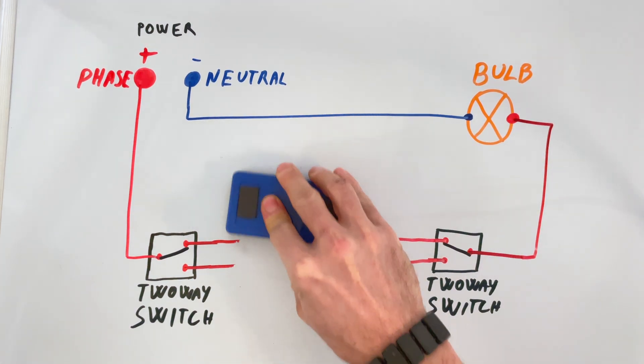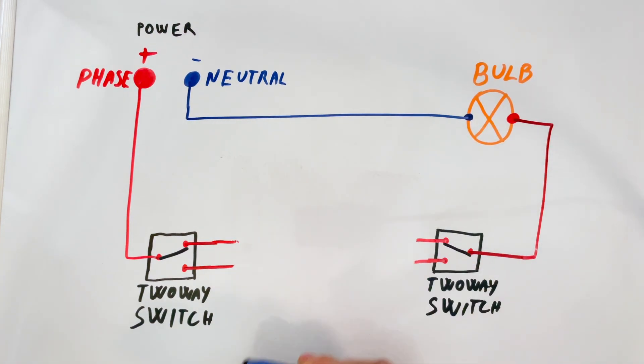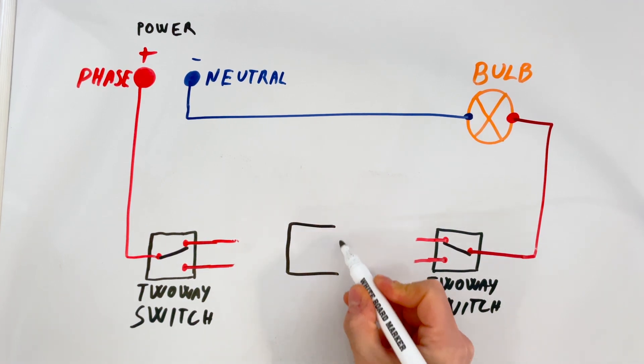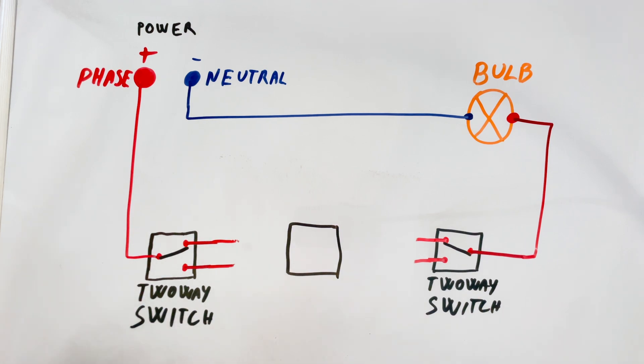Hi, I'm Ferry from BFJ Electric. In my last video, I showed you how to wire a two-way switch allowing you to control a light from two locations. If you haven't seen it yet, I recommend watching it first to understand the basics.